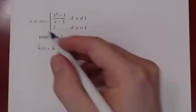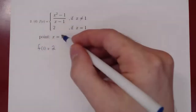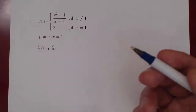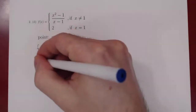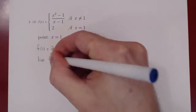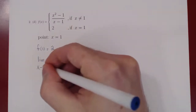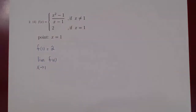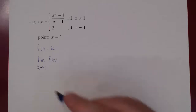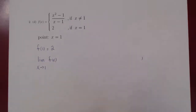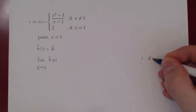Then the question is: what happens to f(x) when x is around 1 but not exactly equal to 1? That is the question of the limit of f(x) as x approaches 1. Remember, if you say x approaches 1, that means x is taking values closer and closer to 1, but x is never exactly equal to 1.